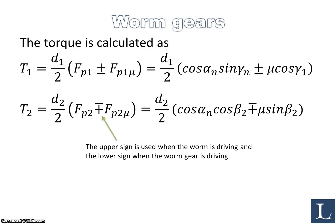Now that we have defined the forces, we have divided the normal force into components, and we also defined the friction forces and its components, we can then put up an equation for the torque in the system. So T1 is d1 over 2 times Fp1, which is the peripheral force, plus minus Fp1_mu, which is the friction force component. Based on the expressions that we have derived just on the previous slides, we can get the expression d1 over 2, and then we have cosine for the pressure angle, sinus for gamma, and we have plus minus mu times cosine for gamma_1.